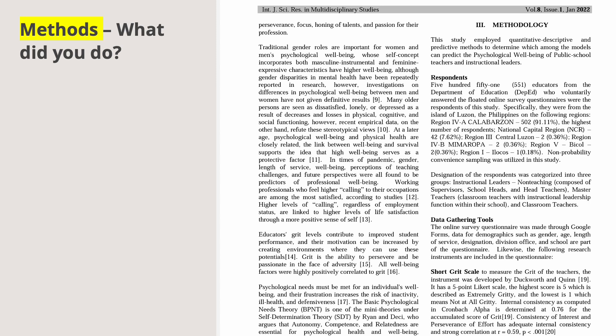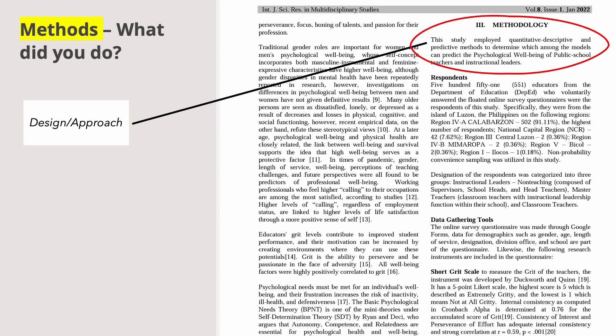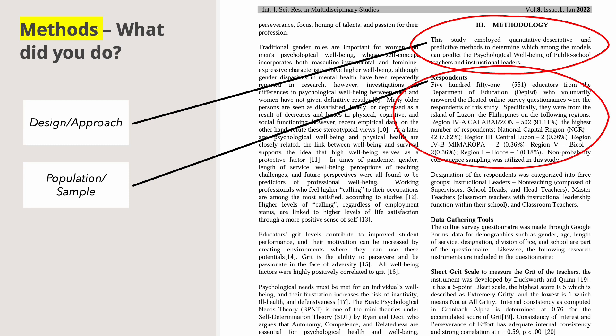The methods section discusses what you did. Regarding the design and approach, looking at the sample journal, the research design is quantitative — specifically quantitative descriptive and predictive. For population or sample, in this study it is described under respondents. The sampling technique used is non-probability convenience sampling and there are 551 respondents.